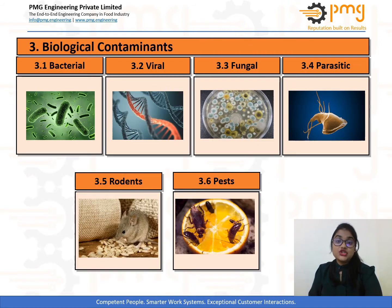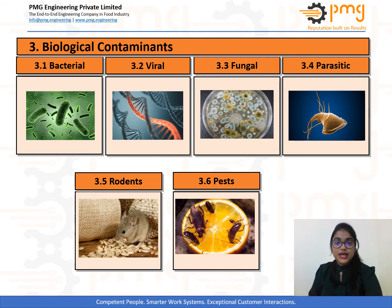Biological contamination refers to food products that are contaminated by substances produced by living creatures such as humans, rodents, pests, or microorganisms. Microbial contamination can be further classified into bacterial, viral, fungal, or parasitic, which are transferred through saliva, pest droppings, blood, or fecal matter. Biological hazards can be introduced to food from the environment, by observing inadequate sanitation practices, or from cross-contamination during transportation.